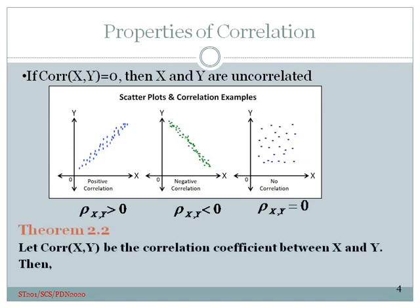Theorem 2.2: The correlation between x and y is always between negative one and positive one.